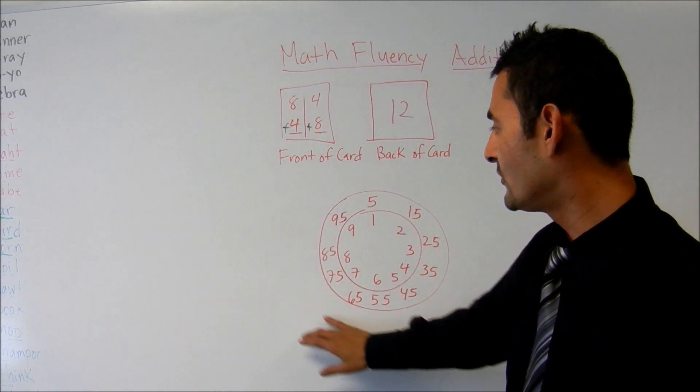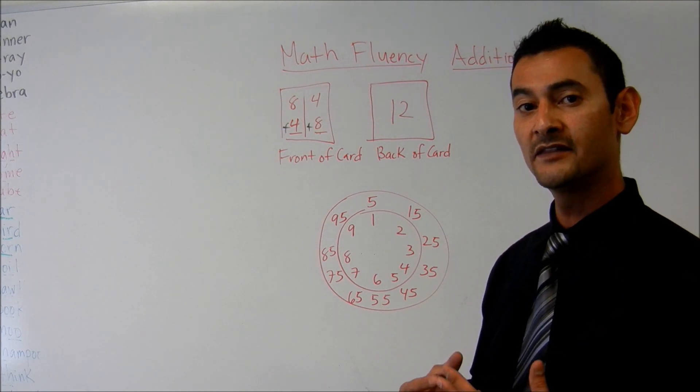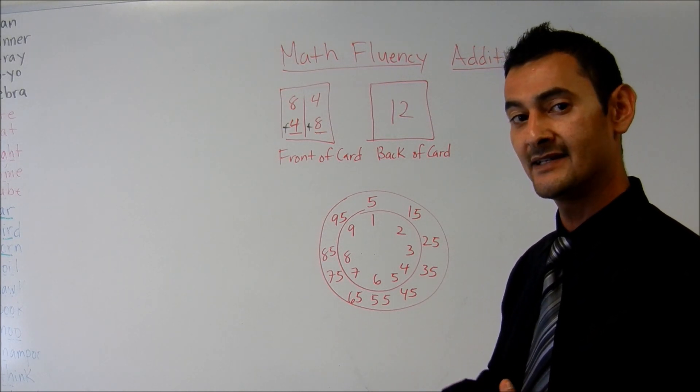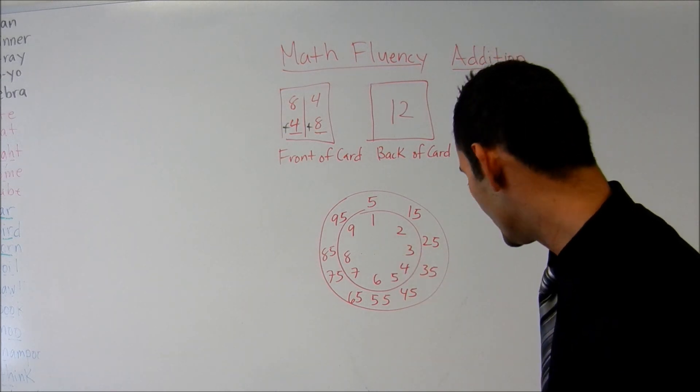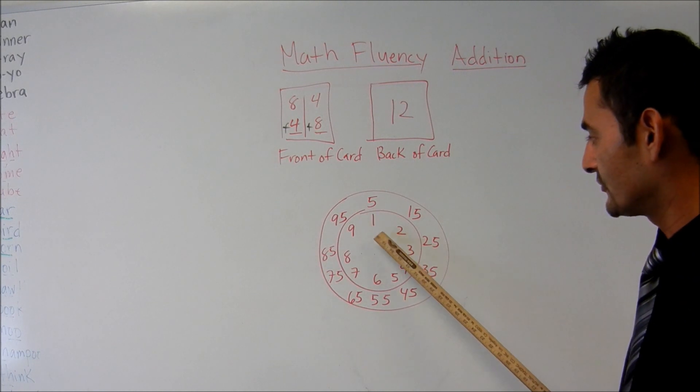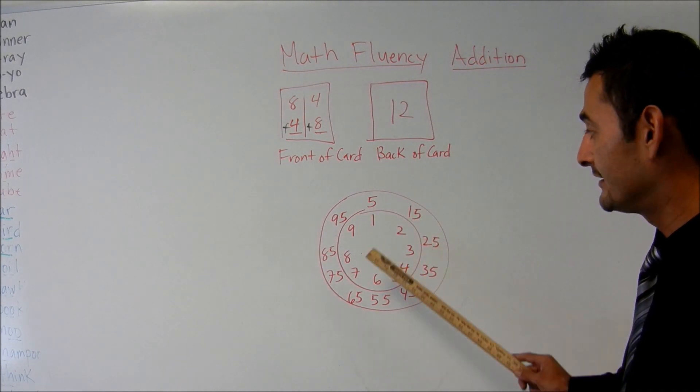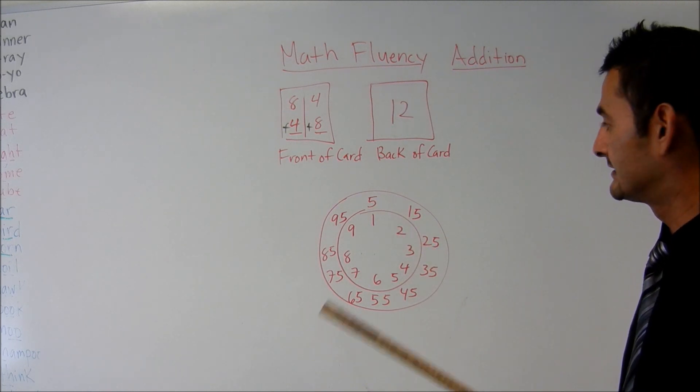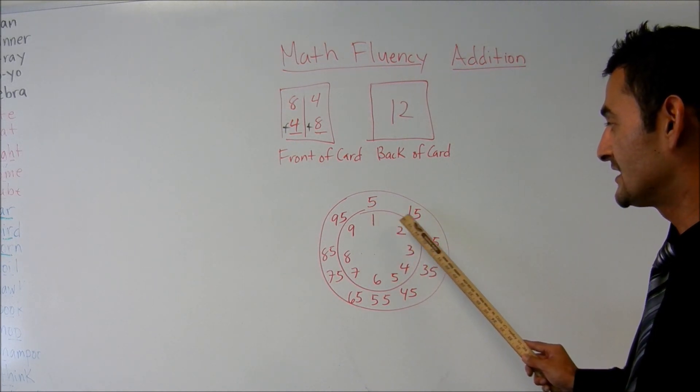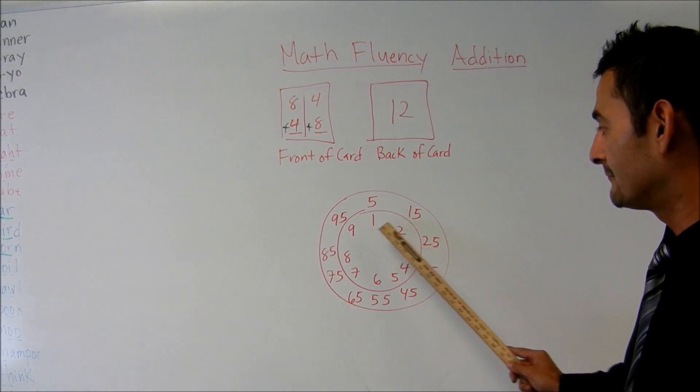And what we want to do is we want them to be able to process the information more quickly. We want them to be able to recognize these numbers and how to add them at a much rapid pace. So what you do here is you're going to look at the inner circle. And what you're going to do is you're going to have your child start to quickly add one plus five. And they should be able to rapidly say six. Then you want them to do one plus fifteen. And they should say sixteen. Then you want them to do one plus twenty-five.